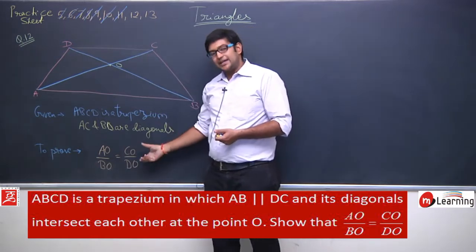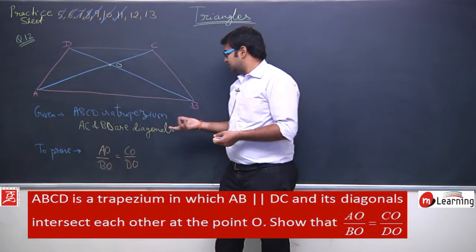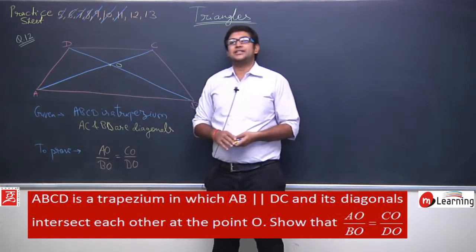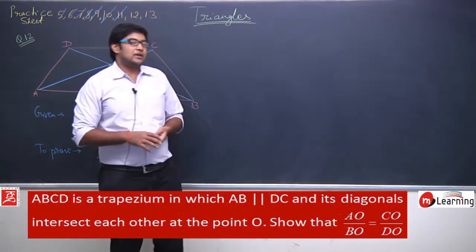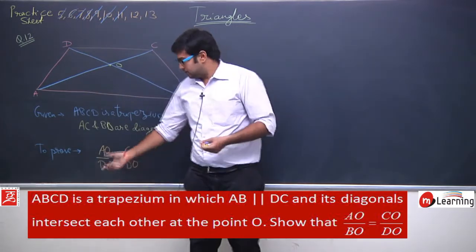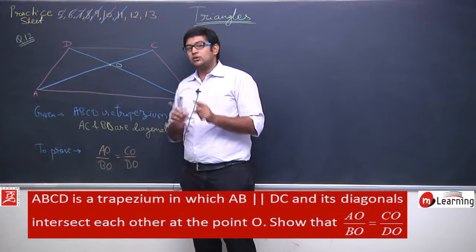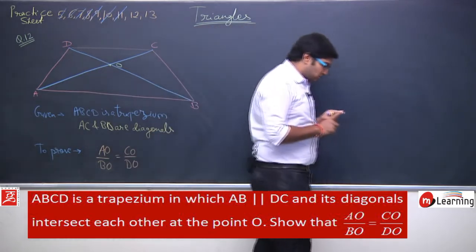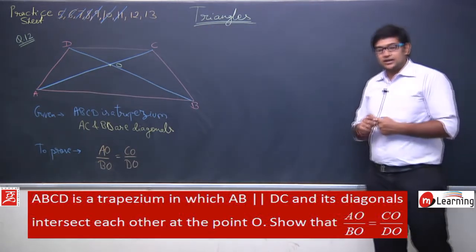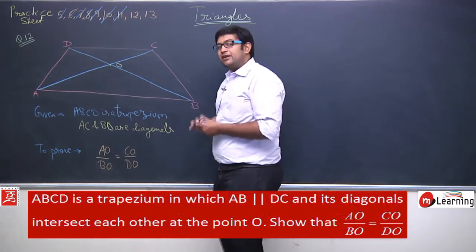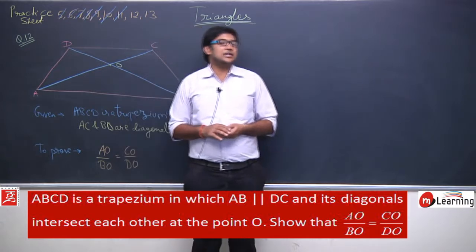Now let us think about this. Since it is a trapezium, we can obtain this condition. We need to prove a ratio — we need to prove that these two line segments of the ratio are proportional. So what should be our approach?